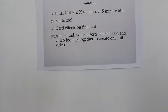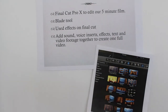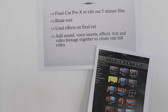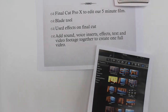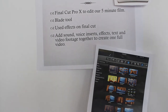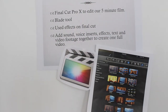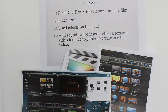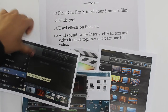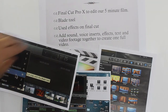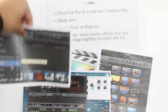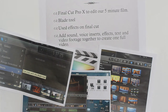We used Final Cut Pro X to edit our 5 minute film. This was a very essential and good software to use to edit videos. We used the blade tool to cut things that weren't necessary in our film, and to merge together any scenes that need to come together, which also kept our narrative clean so it wouldn't confuse the audience. We also used effects on Final Cut so it gives the horror film look and fits well with the genre. This software is amazing because it allowed us to add sound, voice inserts, effects, text and video footage together to create one full video.